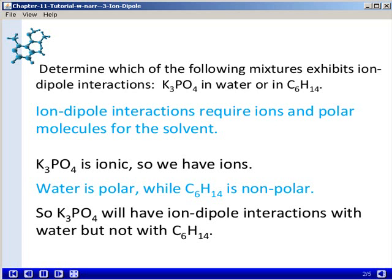Potassium phosphate, K3PO4, is an ionic compound, so it does consist of ions, potassium ions and phosphate ions. And water is a polar molecule, a polar solvent, while C6H14 is a nonpolar substance. So potassium phosphate will have ion-dipole interactions with water, but not with C6H14.